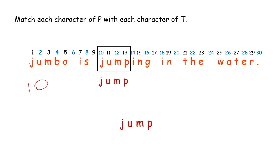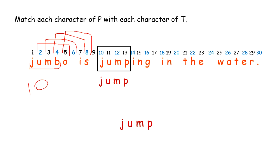Basically, what are we doing? We are making substrings of length 4 (the pattern length). The first substring was J-U-M-B, matched with 'jump'. Then the next four characters form the next substring, and so on — we keep making 4-character substrings and comparing each with the pattern.